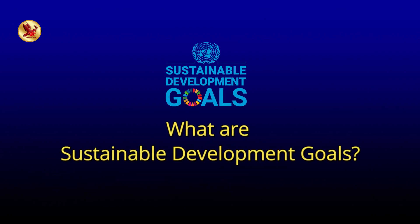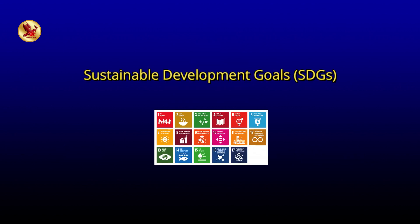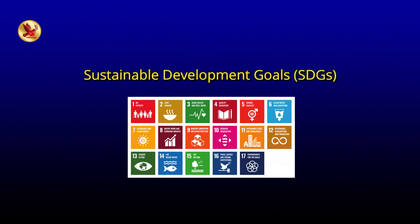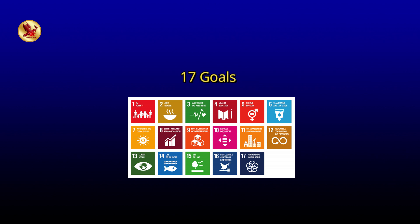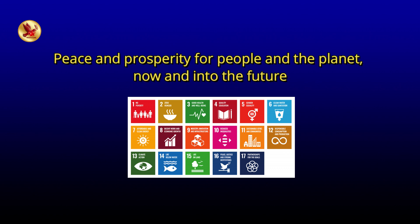What are Sustainable Development Goals? The Sustainable Development Goals, SDGs, or Global Goals consist of 17 interconnected objectives that aim to serve as a universal plan for creating peace and prosperity for people and the planet, both now and in the future.